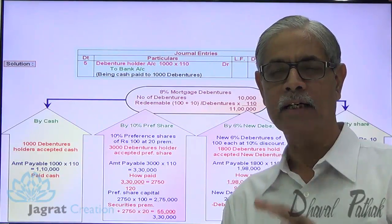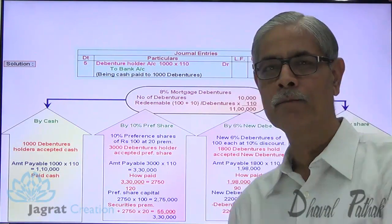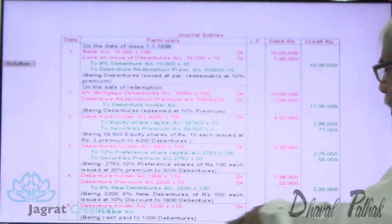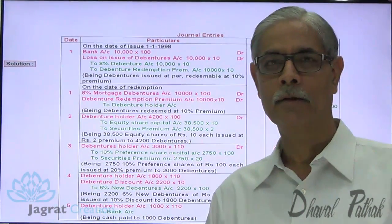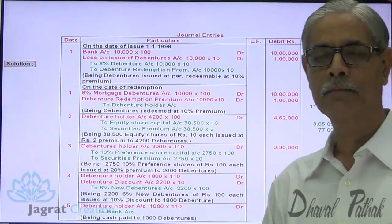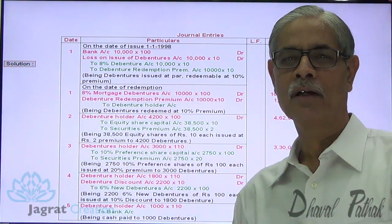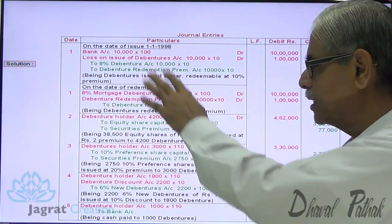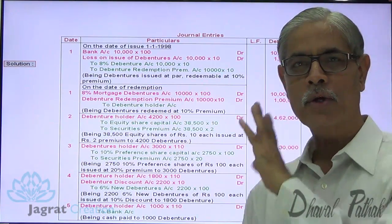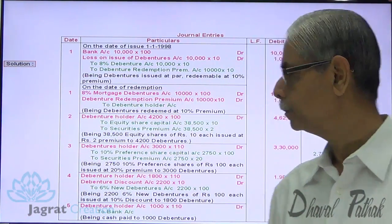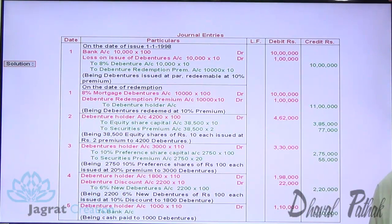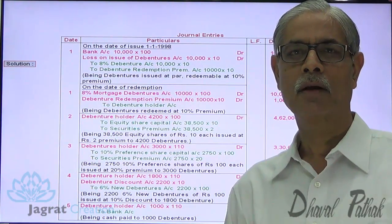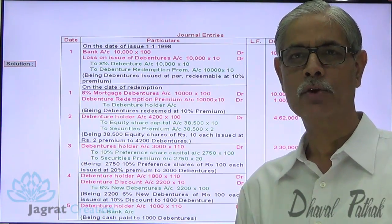After recording all these entries, let me demonstrate all the entries at one place for your better understanding. This is how all the entries are recorded. Notice that I have not made a total because the issue entry is in the past and the redemption entry is at present. This is how journal entries for issue and redemption get recorded. Thanks to all of you.